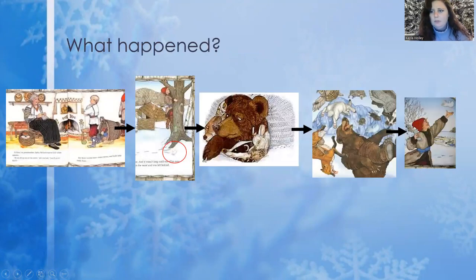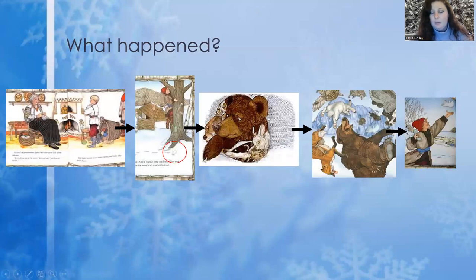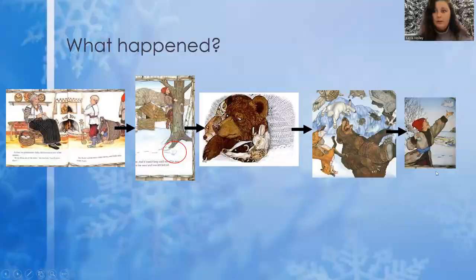Then we need to tell what happened. The first thing that happened was Nicky wanted snow-white mittens. Then Nicky lost one of his mittens, and in that mitten crawled a bunch of animals. Then there was a great big sneeze that blew all the animals out of the mitten, and at the very end Nicky found his mitten, but it wasn't the same — it was stretched out. Today I have my very own white mitten, and we're going to practice retelling the story with our props. I have a mitten and I have some little animals.